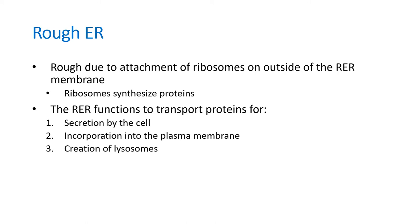The rough endoplasmic reticulum is rough because it has ribosomes on its surface. Those ribosomes make proteins on the surface of the rough ER, and then those proteins are sent into the rough ER. The job of the rough ER is to package those proteins. Those packaged proteins may then leave the cell, get embedded in the plasma membrane, or become a new organelle called lysosomes.